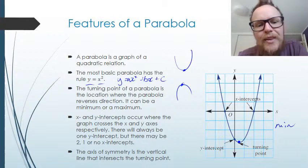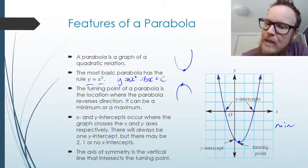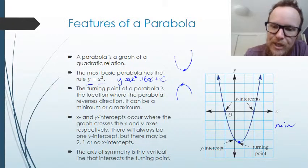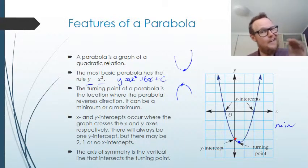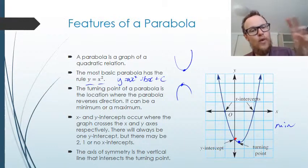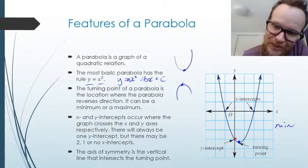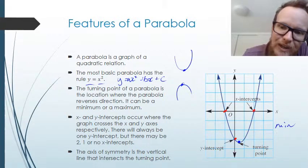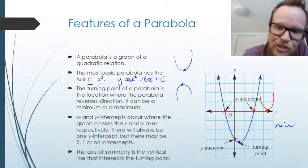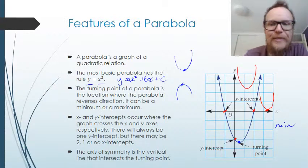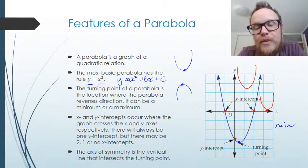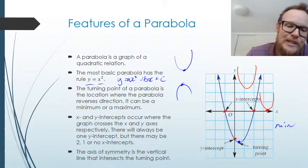The X and Y intercepts are where the graph crosses the X and Y axes respectively. There will always be only one Y-intercept — just like the Highlander, there can be only one. For our X-intercepts, depending on our discriminant, there are going to be either one, two, or no X-intercepts. We can get one when the graph just touches the X-axis, or no real solutions if the graph doesn't cross the X-axis at all.